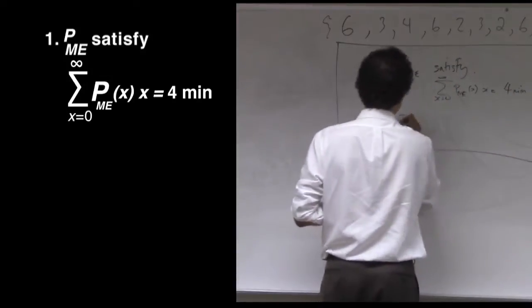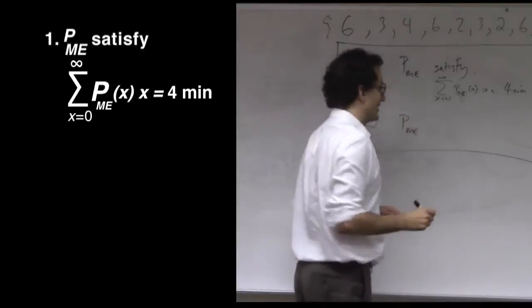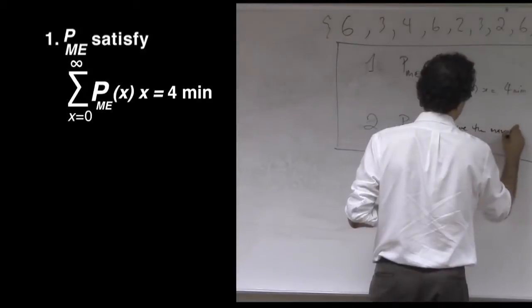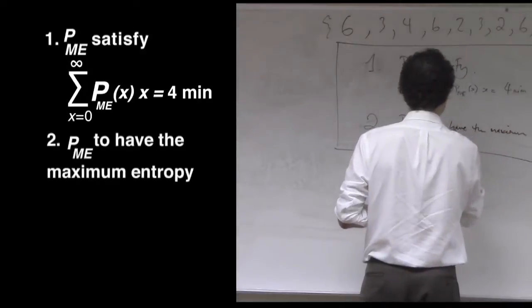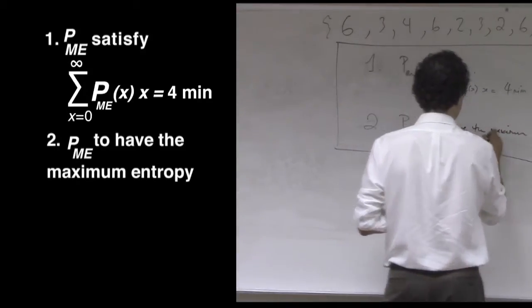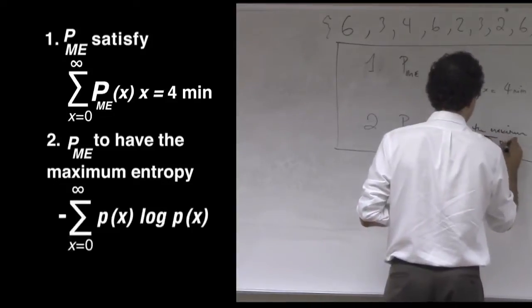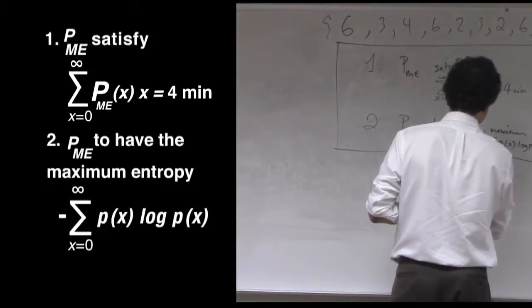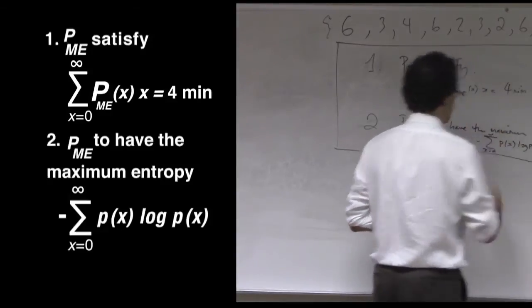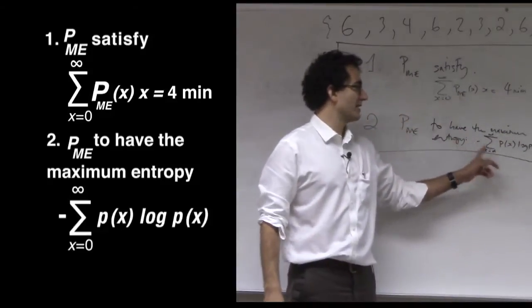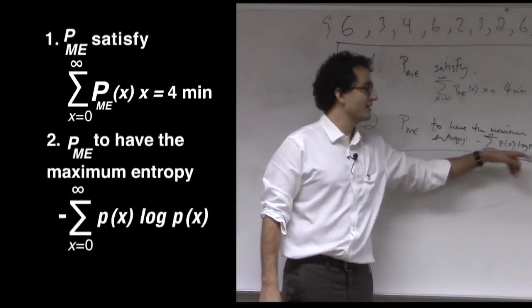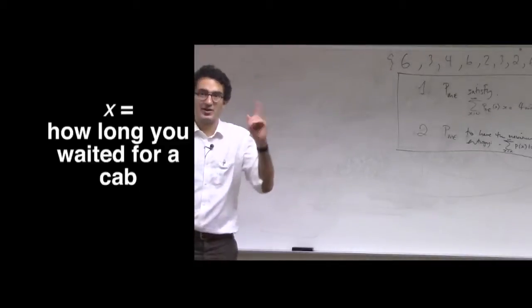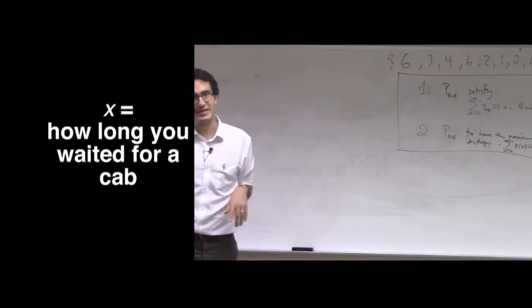And the second thing is we want that particular probability distribution to have the maximum entropy, to maximize the function negative sum over all states of the system p log p. And remember states of the system here are how long you waited for a particular cab, or rather how long you waited on a particular time you decided to start waiting.